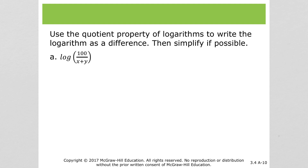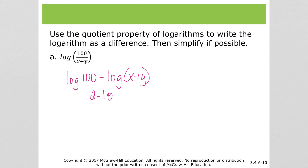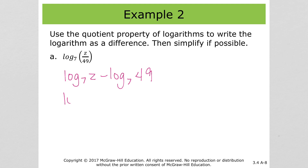For this one, we've got log of 100 divided by (x plus y). That would be log of 100 minus the log of all of (x plus y) — make sure you put that in parentheses. The log of 100 simplifies to 2, since log base 10 of 10 squared is just 2. So we get 2 minus log of (x plus y). Going back to part a, 49 is 7 squared, so log base 7 of 7 squared is also 2.